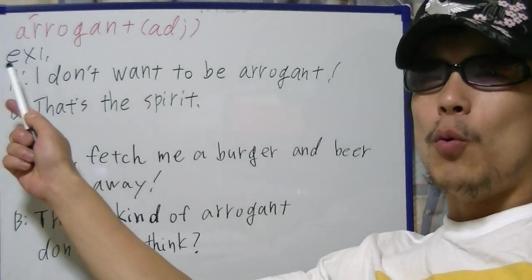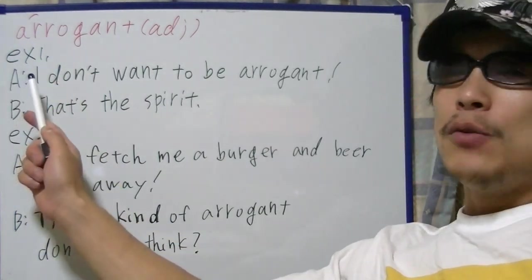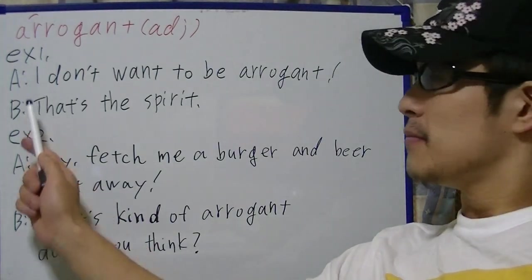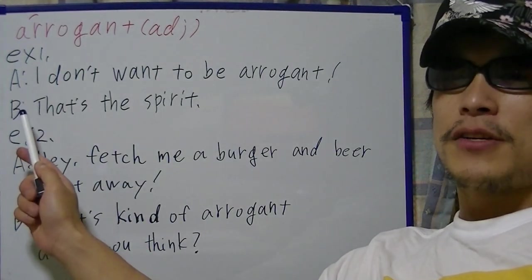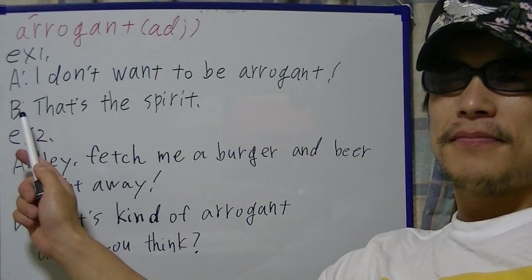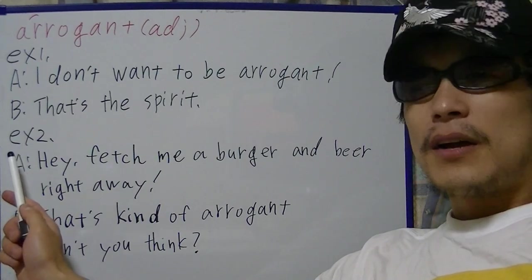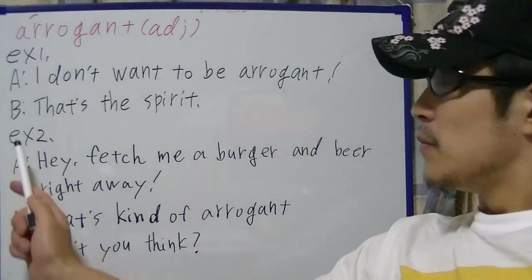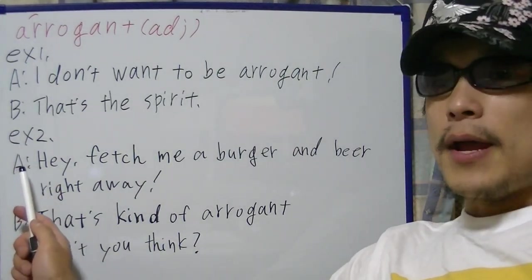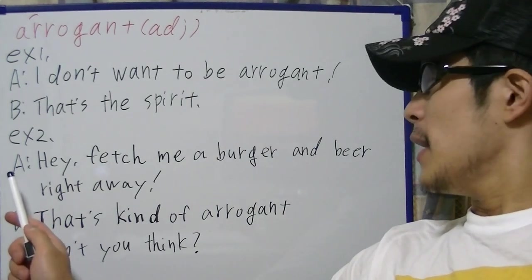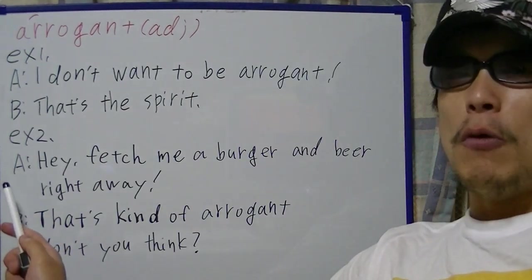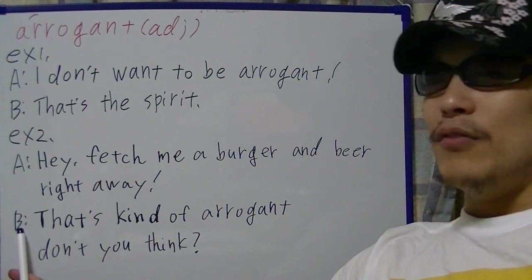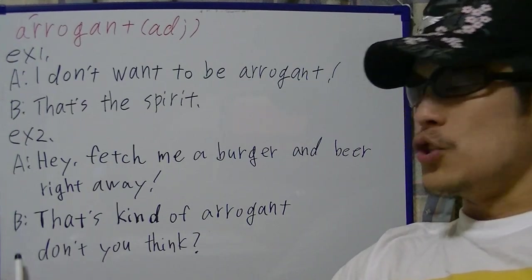Example 1. I don't want to be arrogant. That's a spirit. Next, Example 2. Hey, fetch me a burger and beer right away. That's kind of arrogant, don't you think?